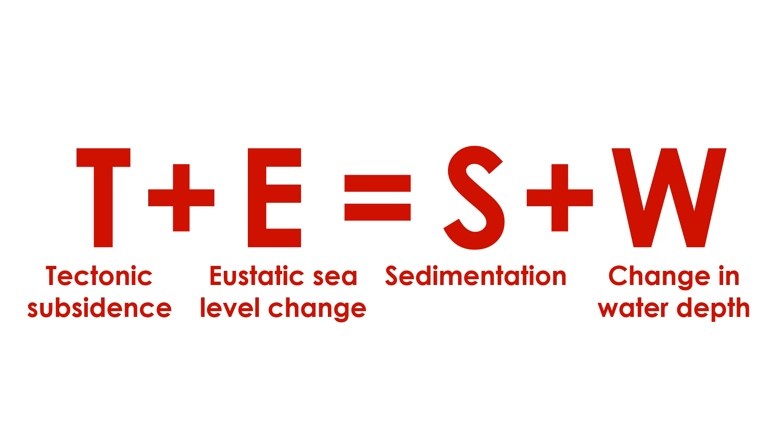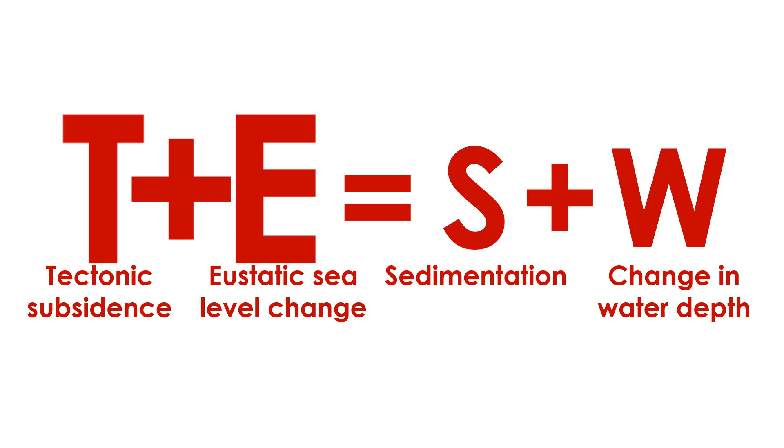We can summarize the relationships between accommodation space and tectonic processes, eustatic sea level change, and sedimentation rates with an equation. In this equation, the variables are all rates. T is the rate of tectonic subsidence, E is the rate of sea level change, S is the sedimentation rate, and W is the change in water depth. Negative values for T and E mean uplift and falling sea level respectively; positive values mean increasing accommodation space. If the sum of T and E is positive, then the amount of accommodation space is increasing over time.